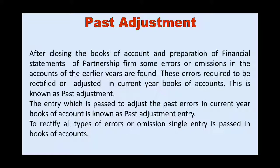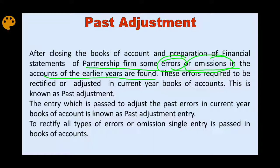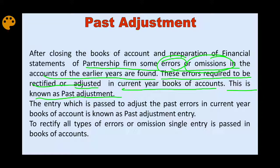The concept of past adjustment is that after closing the books of account and preparation of financial statements, some errors or omissions in the accounts of earlier years are found. When the year is closed and books are also closed, it may be found in the current year that there were some errors in the previous year or some entries were missed. These errors are required to be rectified and adjusted in the current year's books of accounts — this is known as past adjustment. The entry passed to adjust this past error is known as the past adjustment entry.